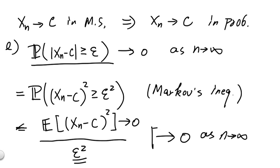So now we have it. We know that the probability of xn minus c, absolute value greater than epsilon, goes to 0 as n goes to infinity, for all fixed value of epsilons. And this is the definition of convergence in probability.